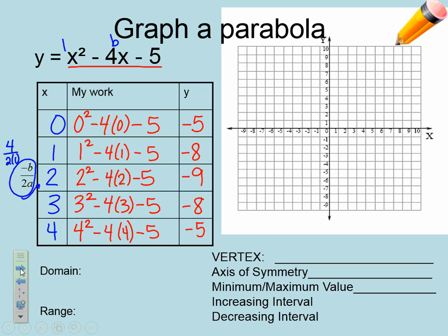Now I need to plot these points. The point (0, negative 5), then (1, negative 8), (2, negative 9), (3, negative 8), and (4, negative 5). This is not a v-shape because the slope on the arms is not constant — it's a u-shape, a little bit more curved. That is a picture of my parabola.